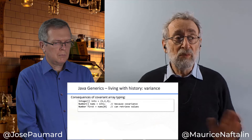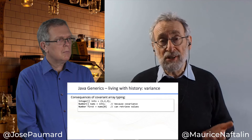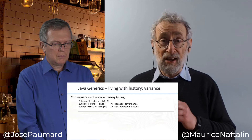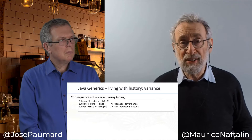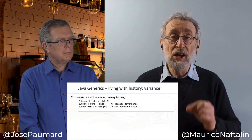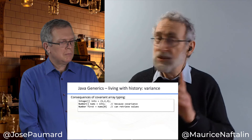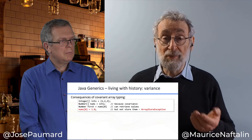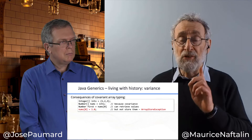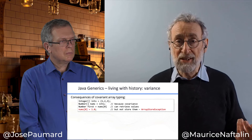Covariant typing was adopted for arrays, but it has drawbacks. We can create an array of Integer, assign a reference to it to a variable of type Number array, and retrieve an element as a Number — that works fine, because covariantly typed containers are good for retrieving values from. But they're not good for putting values into. When we try to put a Double into the number array, the code is statically well-typed, but since arrays know their component type at runtime, what should be a compile-time error becomes instead a runtime exception.